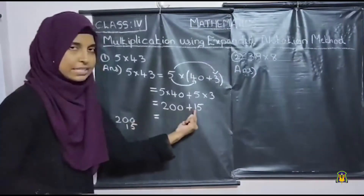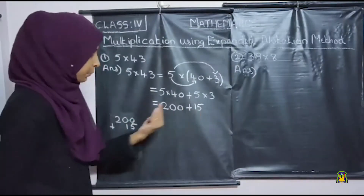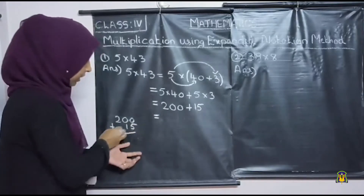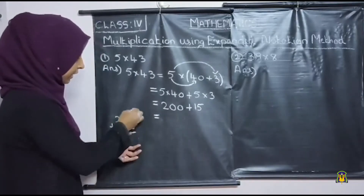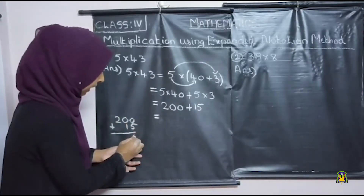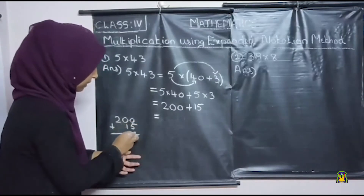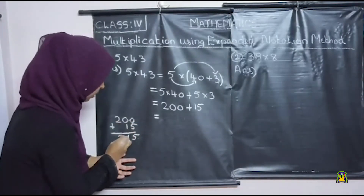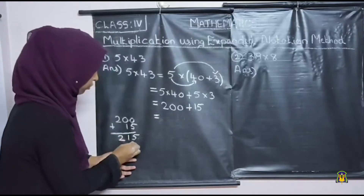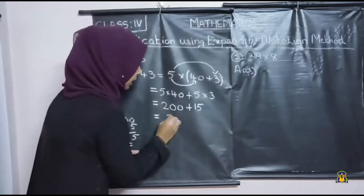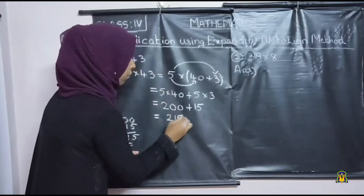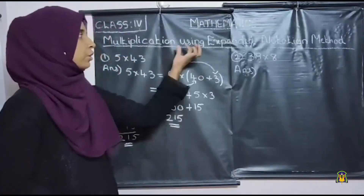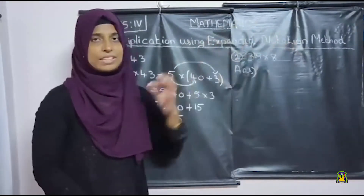Here 5 is in the tens place, that's why I have written 5 below the tens place. What is 200 plus 15? 0 plus 5 is 5, then 0 plus 1 is 1, then 2 — there are no more numbers here — so 2. So the product is 215 using the expanded notation method.